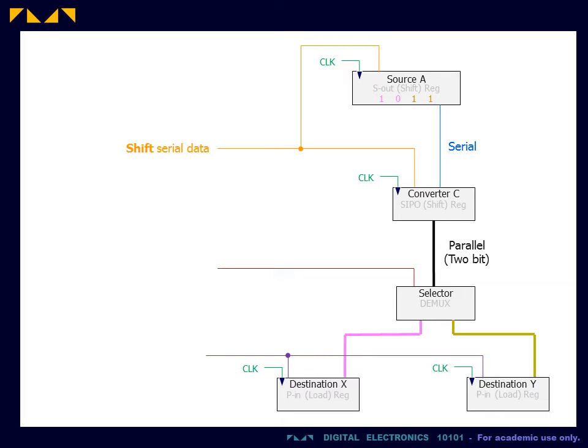The first active high control input will shift serial data out of the source and into the converter. The second control input selects the destination. This input is 0 to select x or 1 to select y. The third control input is an active high parallel load of the selected destination.